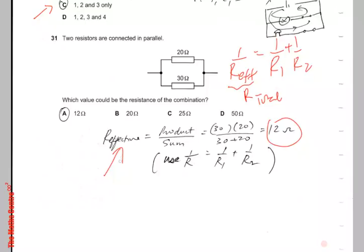This only works when you are having 2 resistors connected in parallel. Use this formula. The effective resistance or the total resistance will just be the product divided by the sum. The correct response will be A.